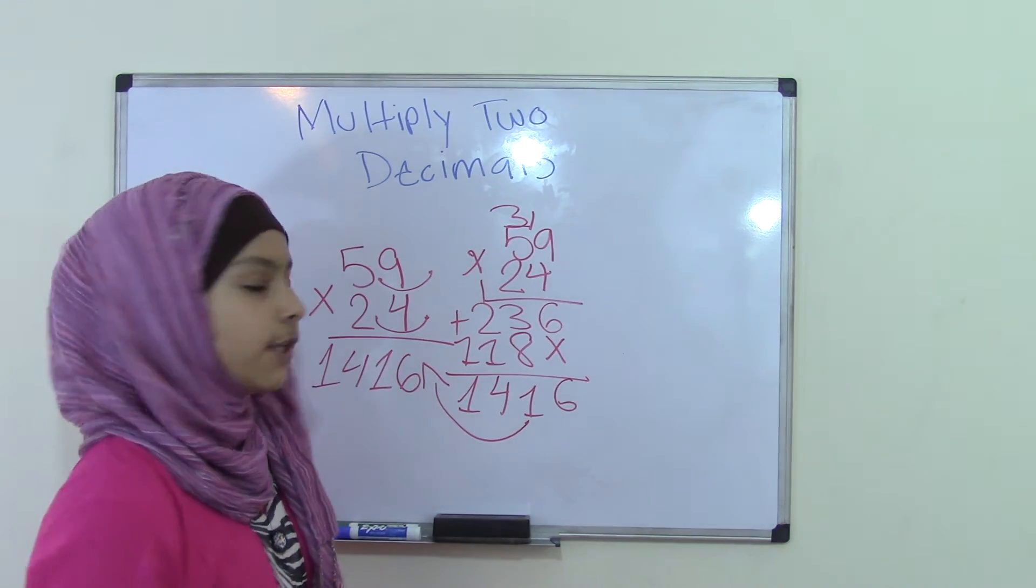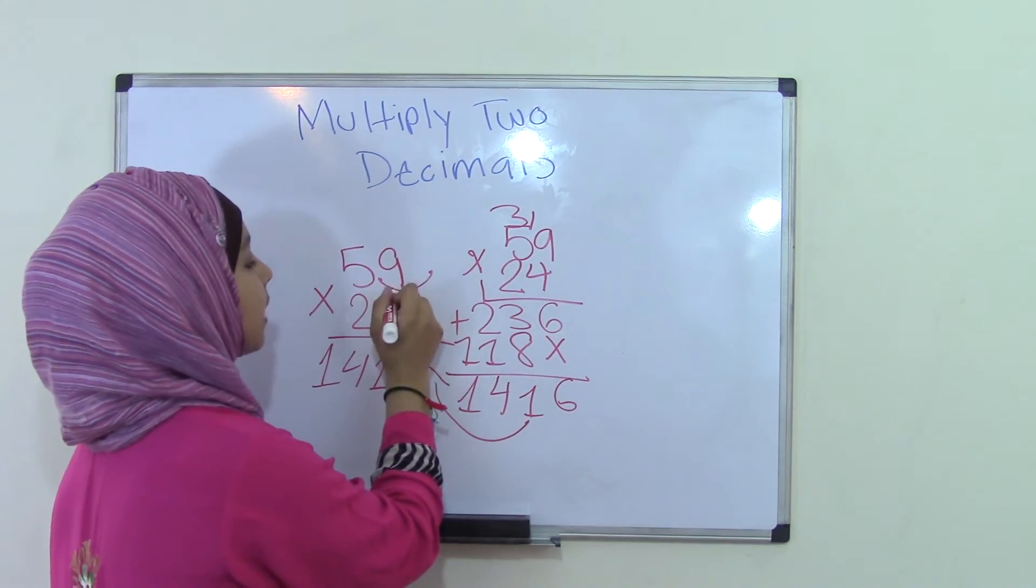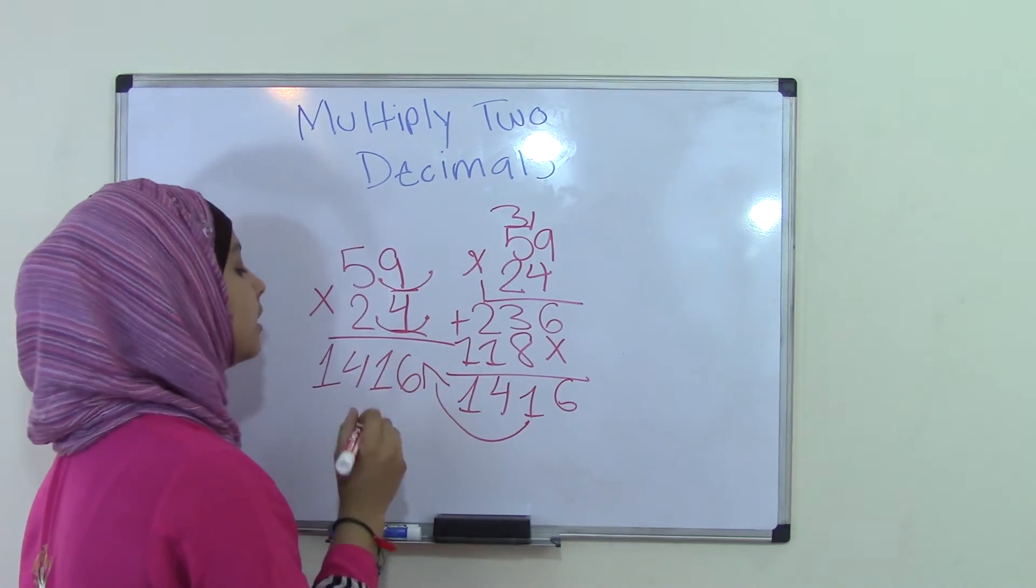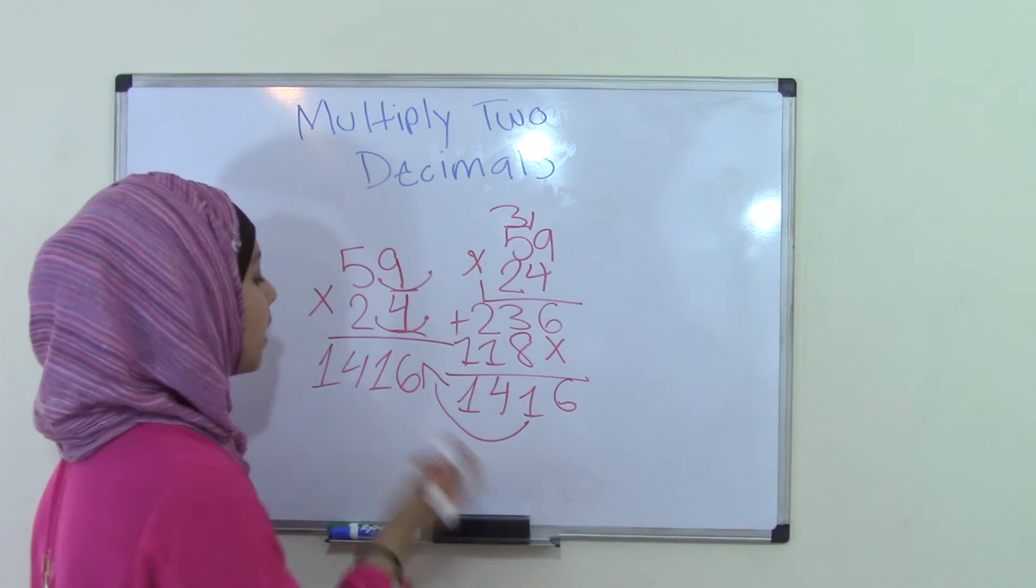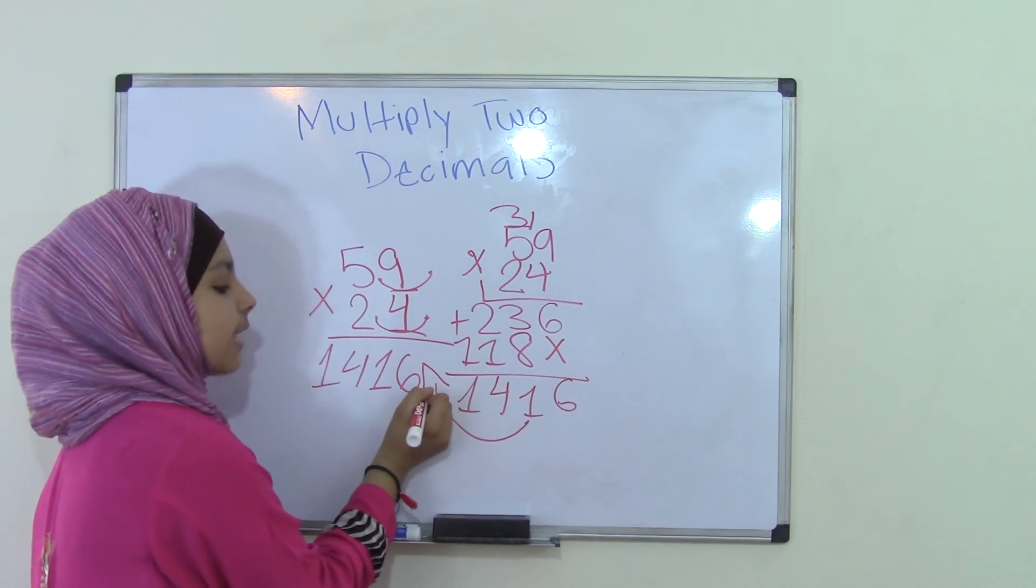And you're going to count the number of digits after the decimal point. So that's 1, 2. And you're going to take the decimal point in your product. Now we know that 1,416 is a whole number, right? So in whole numbers, the decimal point is always at the end.